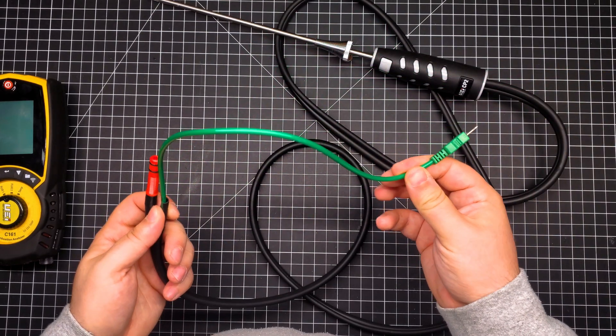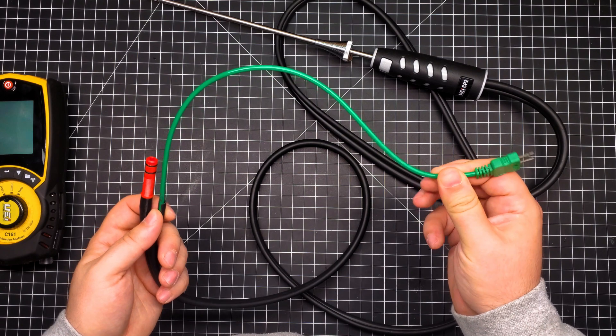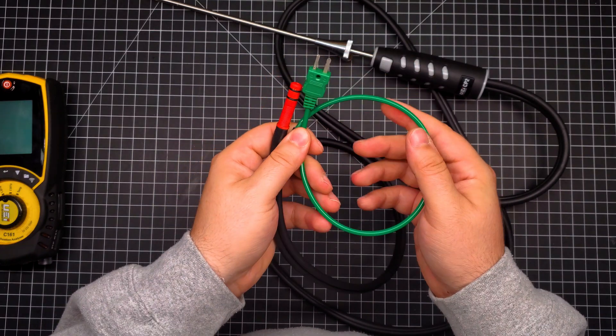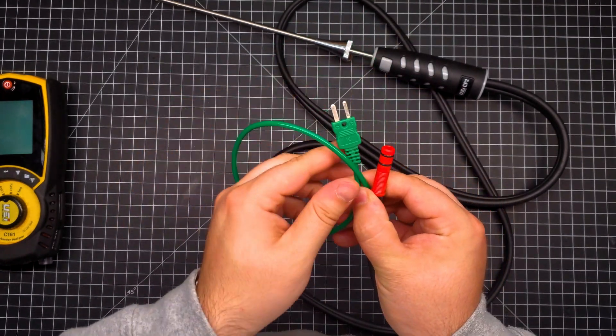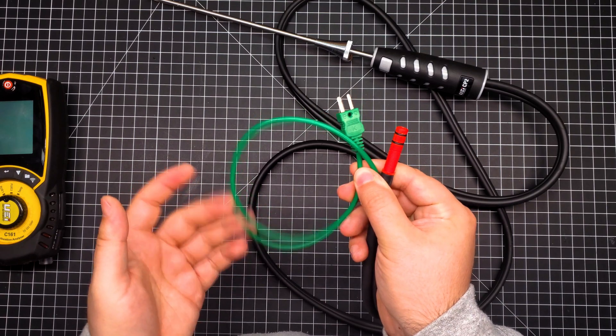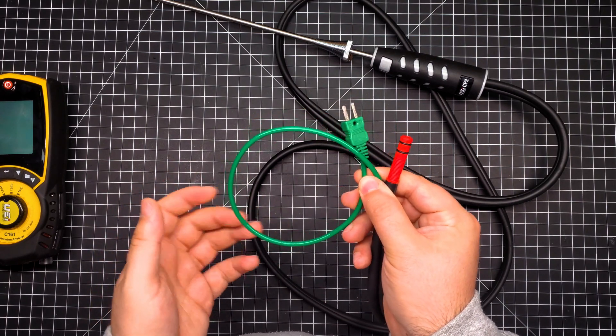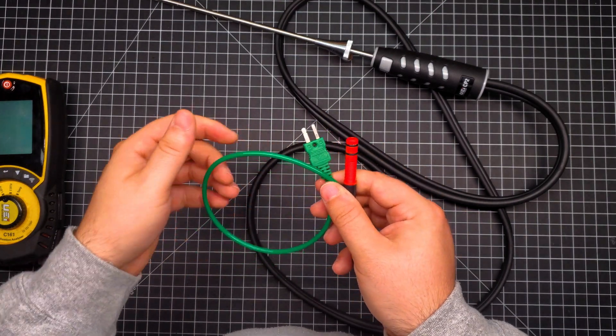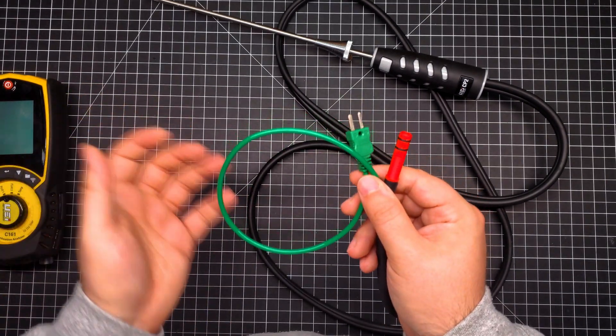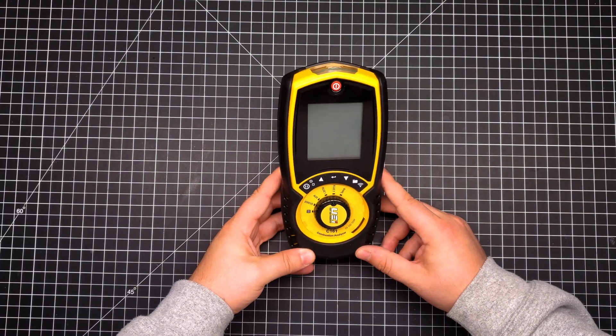I would have also liked to have this end a little shorter because I do find it's very very long. I end up coiling it like so before inserting it in the combustion analyzer, but you always kind of have this dangling around here that gets annoying. It's just something minor, hasn't really bothered me too much, but it does get in the way a little bit.